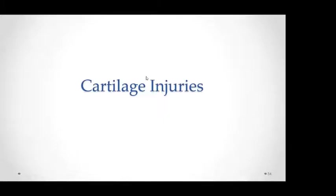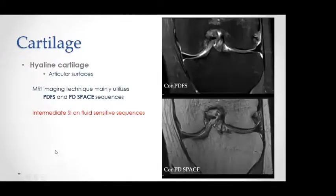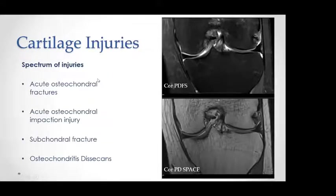Moving on to cartilage injuries. Histopathologically, we have three types of cartilage; our focus is on hyaline cartilage and fibrocartilage. Hyaline cartilage appears as an intermediate signal intensity layer covering the articular surfaces on coronal PD space and coronal PDFS. The spectrum of cartilage injuries includes acute osteochondral fractures, osteochondral impaction injury, subchondral fractures, and osteochondritis dissecans.